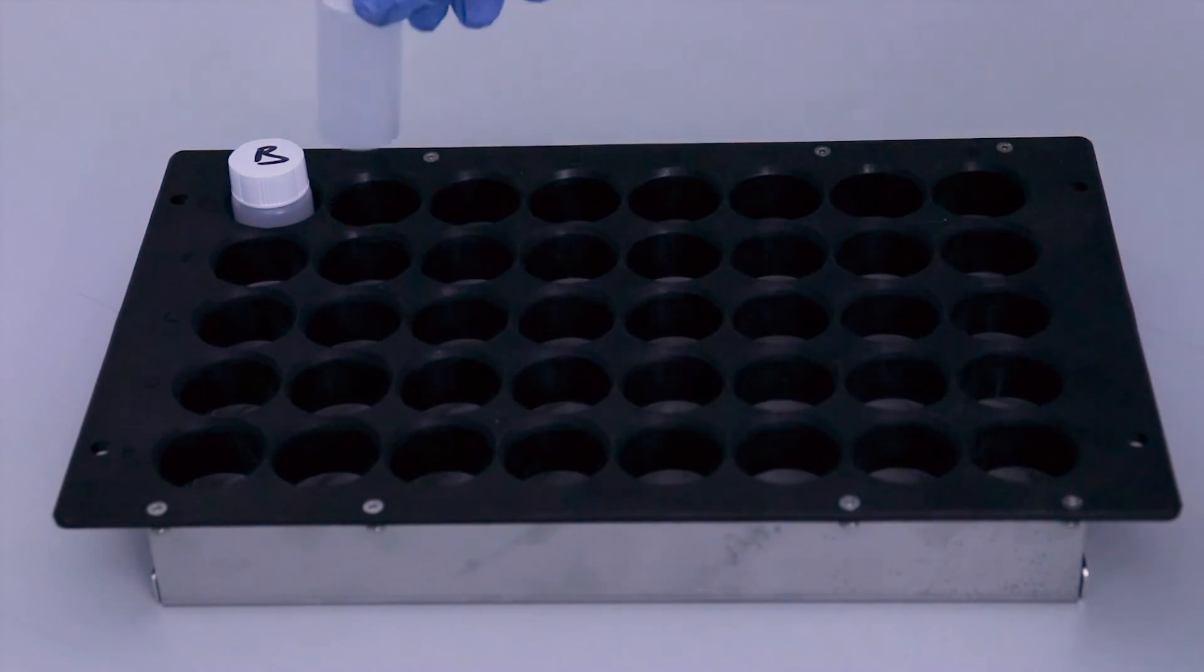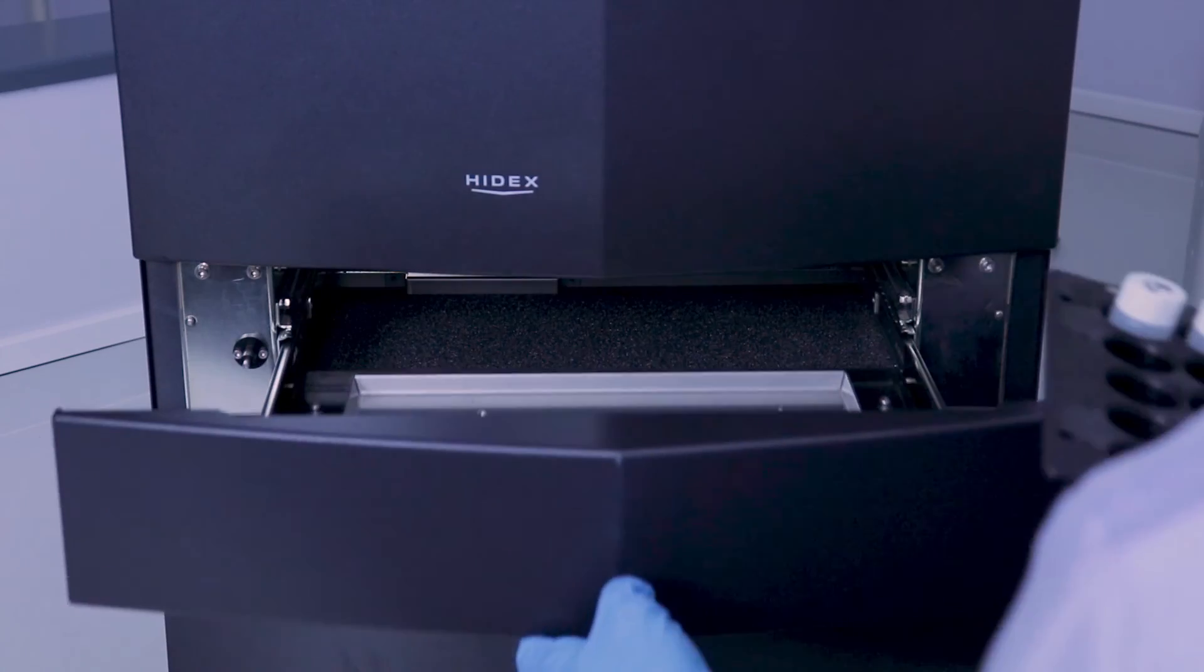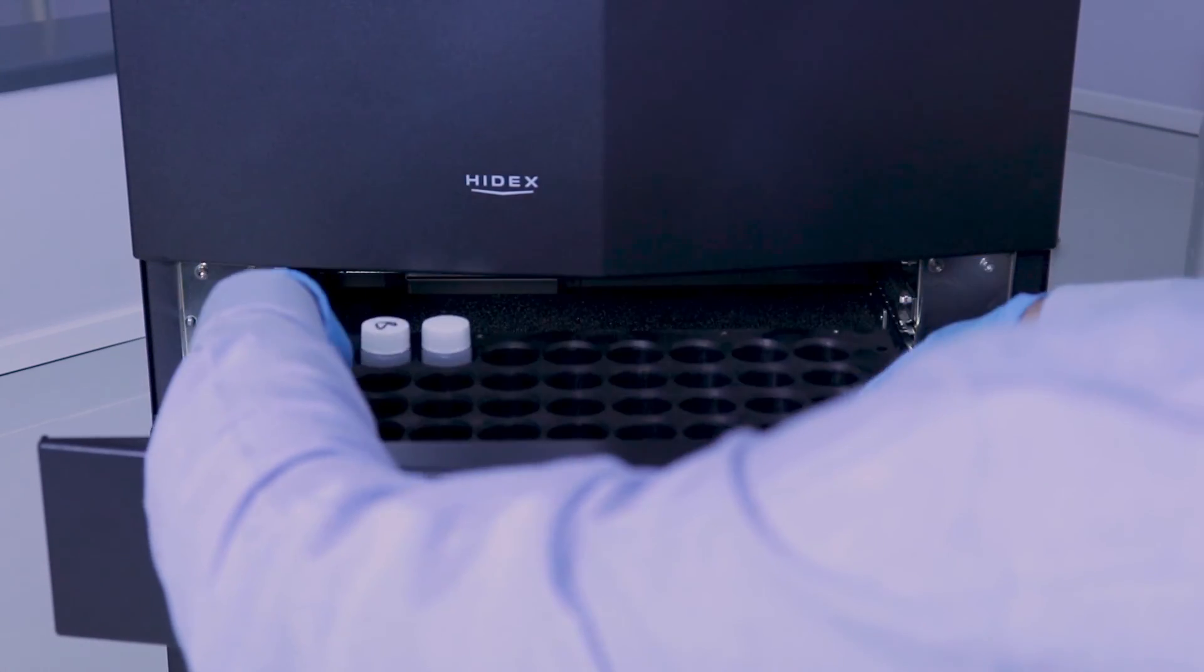Place in tray in sequential order. The first sample should be your background: clean wipe with cocktail only. The Micro Win software background subtracts the first position.